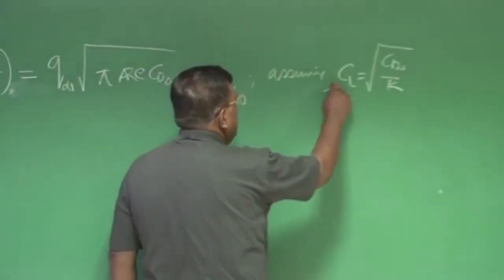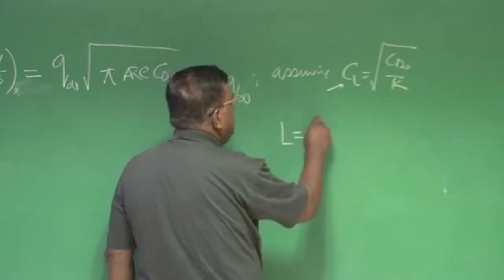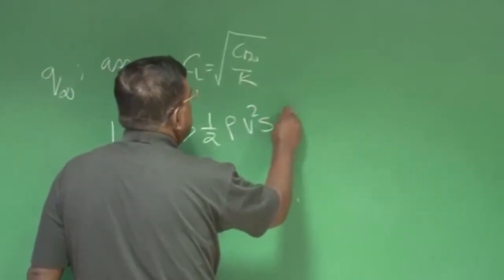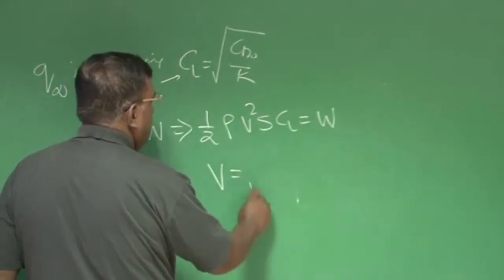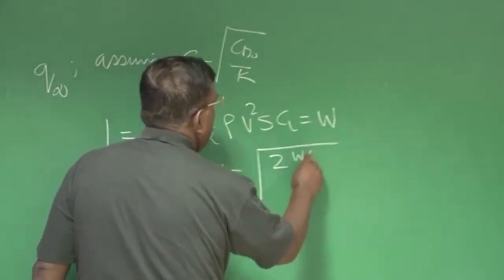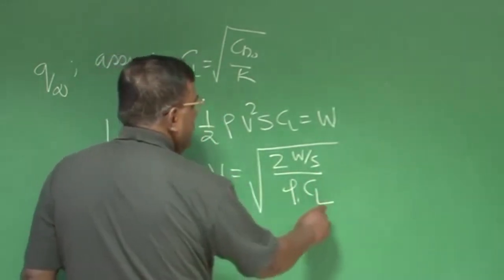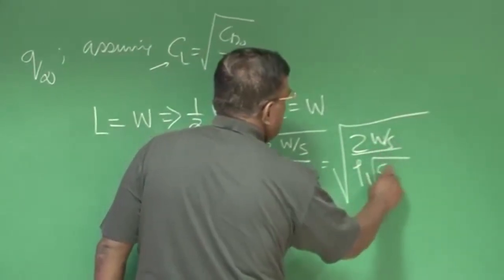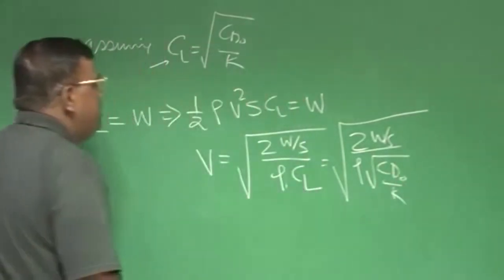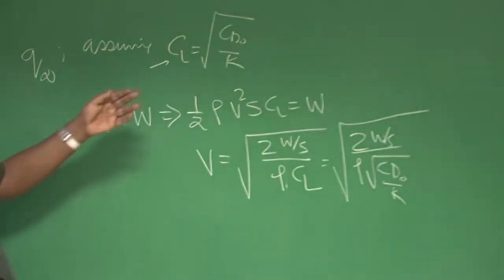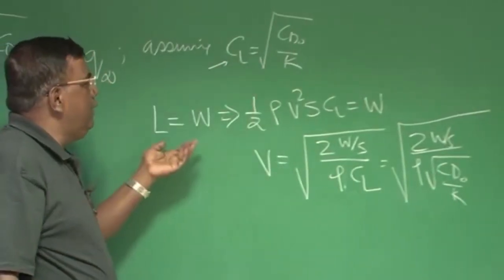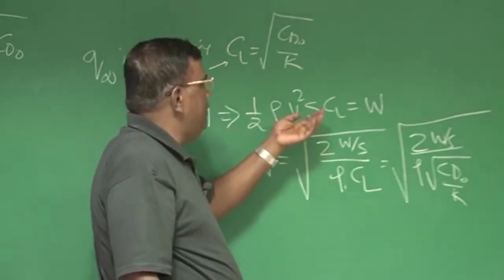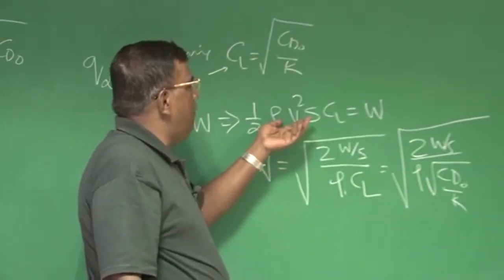So if you are really flying at that CL, at that cruise, lift should equal weight. Therefore V = sqrt(2(W/S) / (rho × CL)), and CL is sqrt(CD0 / K). The message is: once I am trying to fly at CL = sqrt(CD0/K), then for a given S and given weight, V is also fixed.